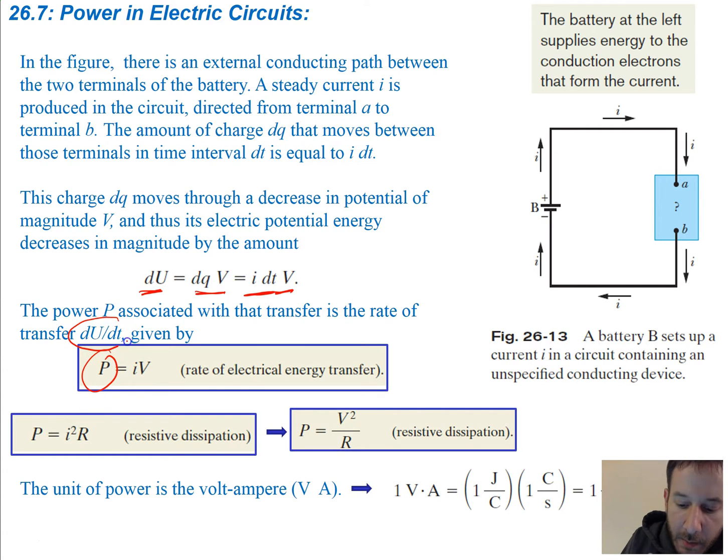So the amount of change of potential energy divided by dt. And if you remember power in mechanics, power was equal to some increment of work. And we know that work is just going to be your change of potential energy. So we can say that our power is equal to the current times the voltage, and that's going to be the rate of electrical energy transfer in the circuit.